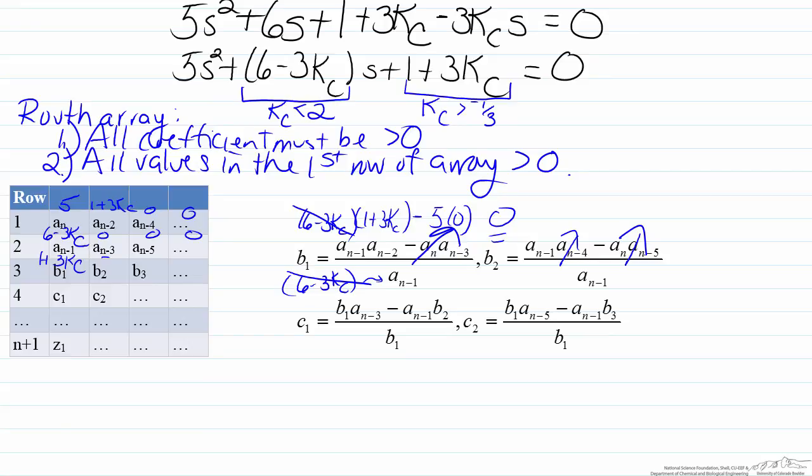so therefore b2 will be 0. And for c1, an minus 3 and b2 are both 0, so therefore c1 is 0. So thus all the other terms here are 0.